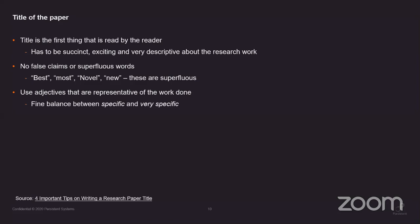Let's talk about how to write a title. The title is the first thing read, and it has to be exciting, brief, and descriptive about the research work. It can't be very vague and mysterious — it should talk about what the research is, sound exciting, and not be variable. Avoid superfluous words like 'best' or 'novel' — just say 'algorithm for' rather than 'a new algorithm for.' As long as you create excitement and describe the research in the title, it will bring in a lot of interest.